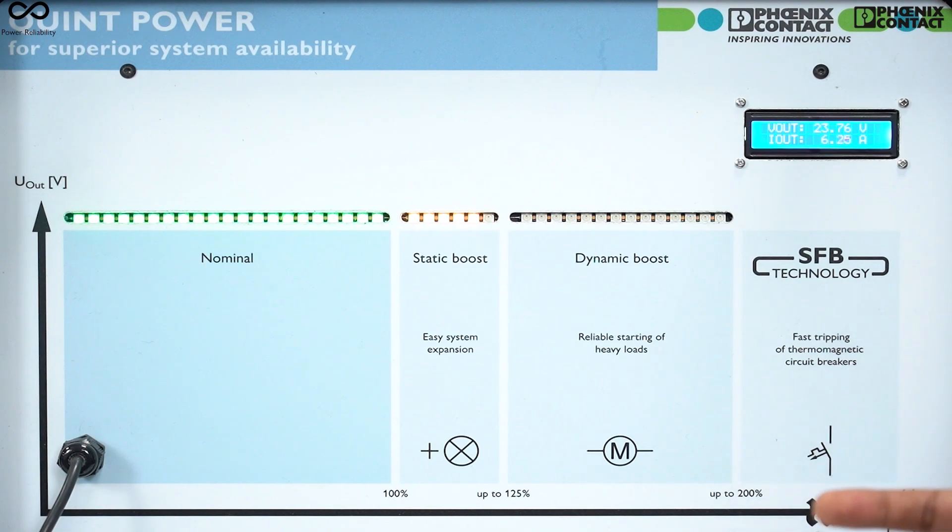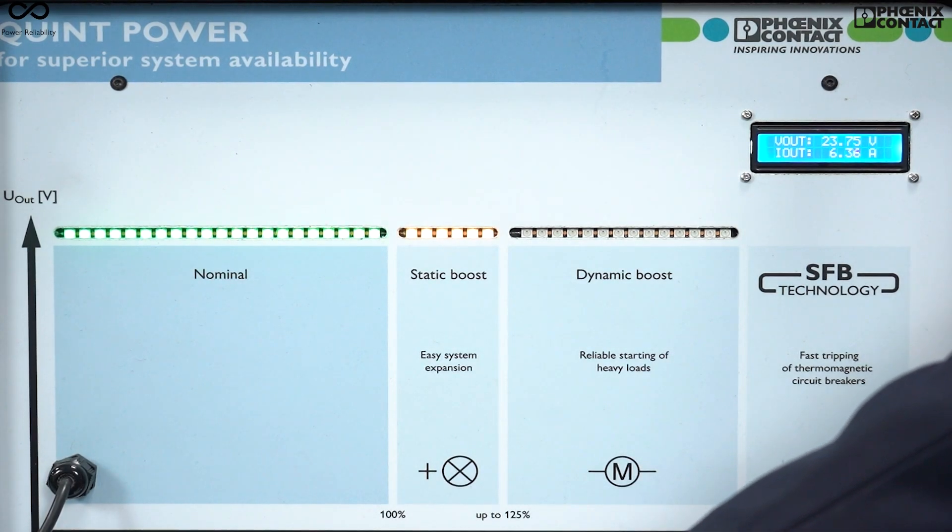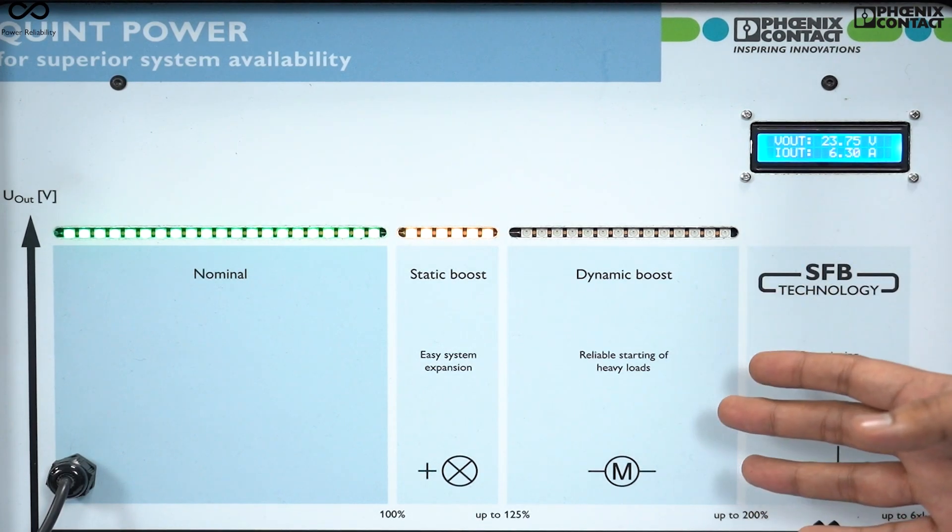If I make this power supply work in dynamic boost condition, this power supply is now providing 10 ampere of current and it is only limited for 5 seconds. In dynamic boost feature, the power supply will give you 200 percent of the rated value. That means here 5 ampere power supply will provide 10 ampere of current for 5 seconds. This dynamic boost feature is required to start reliably your heavy loads.